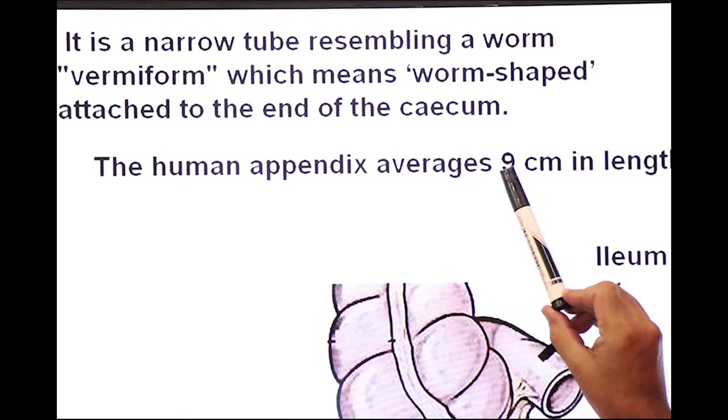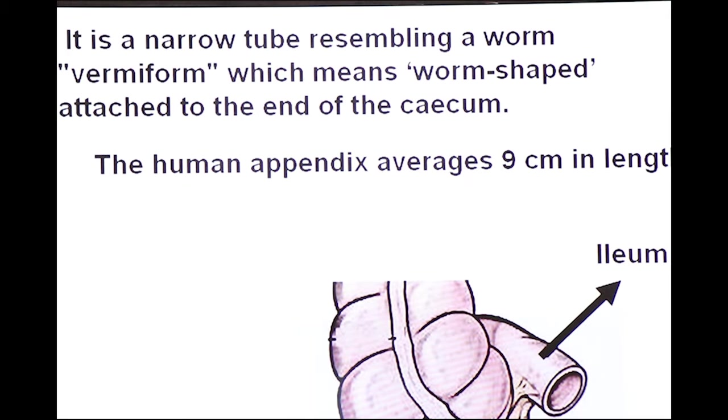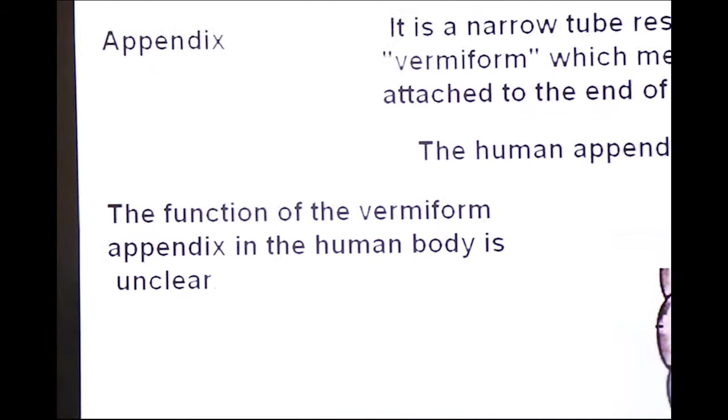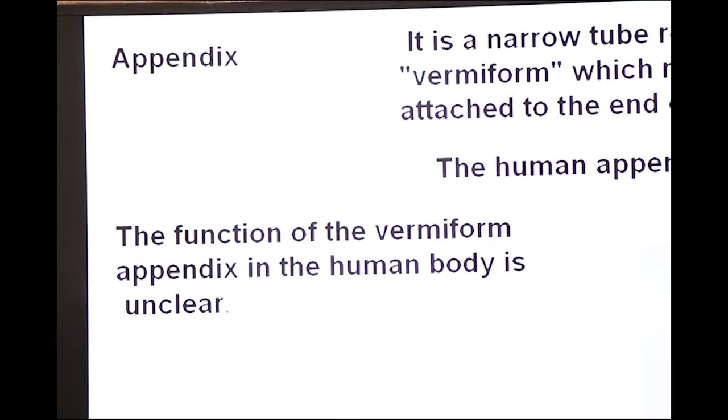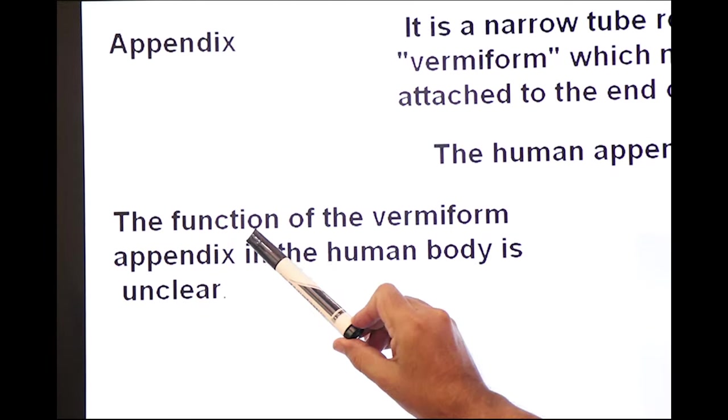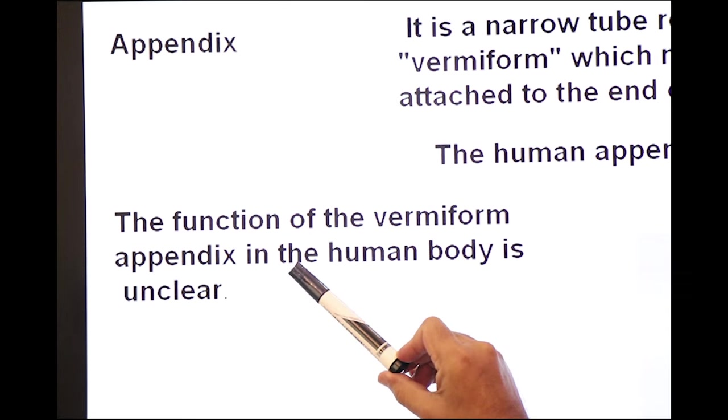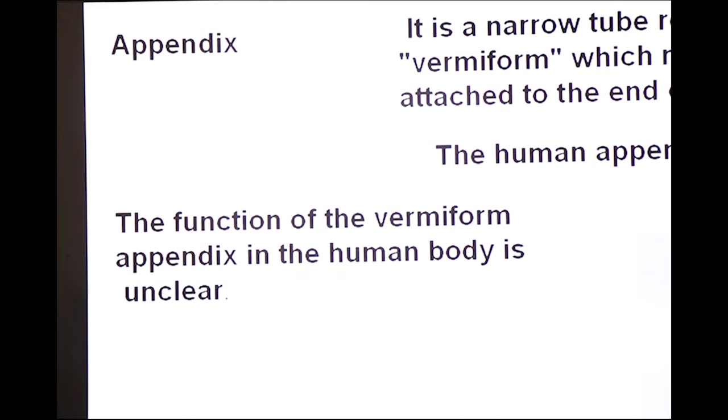The human appendix averages 9 cm in length and the function of vermiform appendix is not clear. The function of vermiform appendix in human body is unclear.